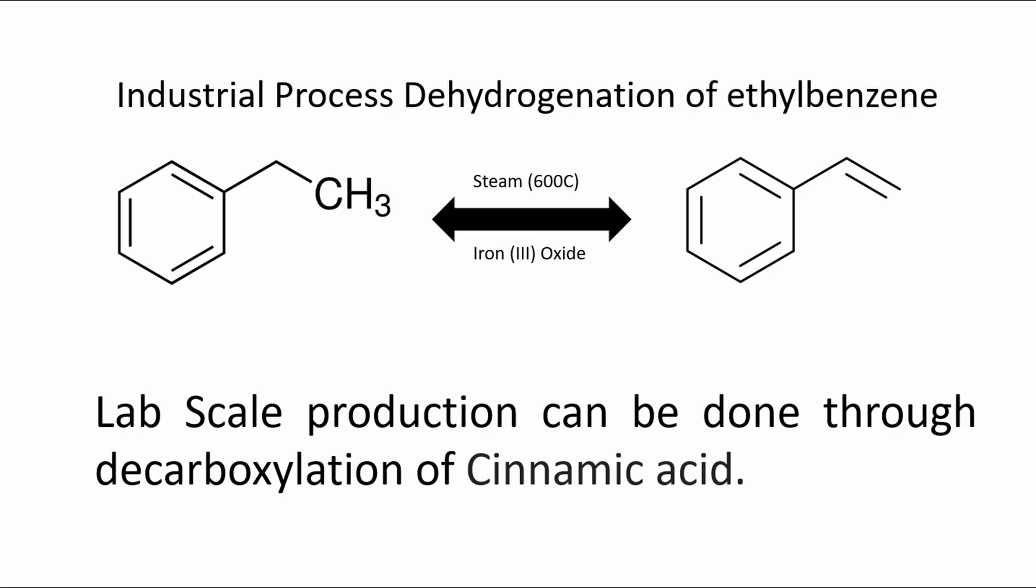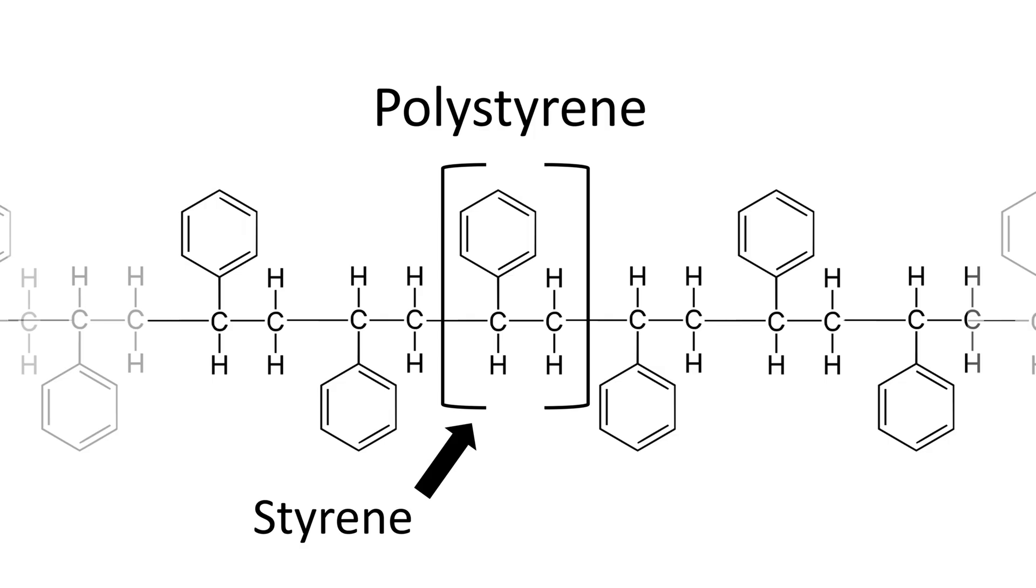In the lab, styrene can be synthesized a few ways. The most common, which is dehydrogenation of ethylbenzene. This becomes pointless when we take a look back at polystyrene. The reason why is it's a polymer. All we need to do if we want styrene is to completely depolymerize the polystyrene, which is easier said than done.